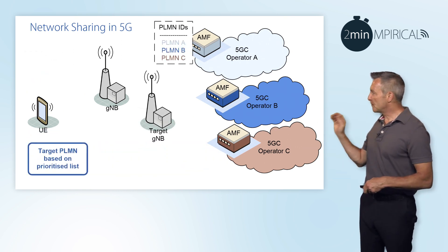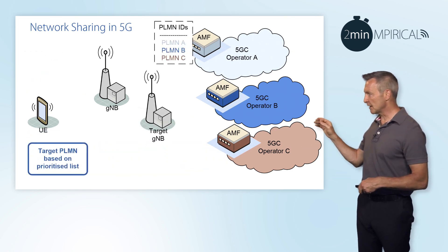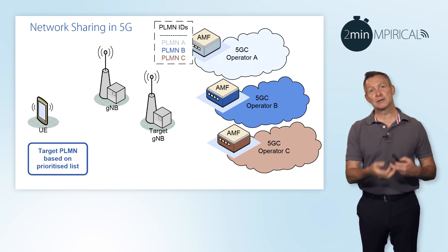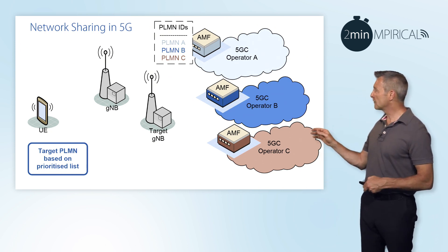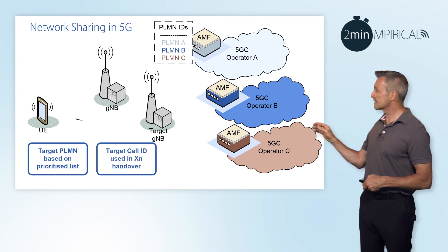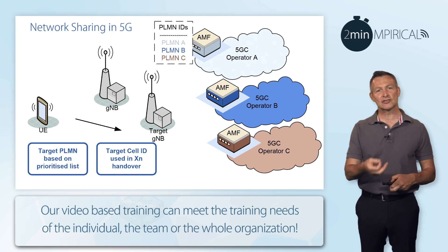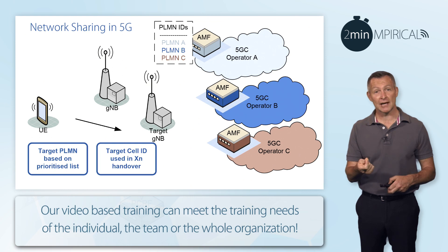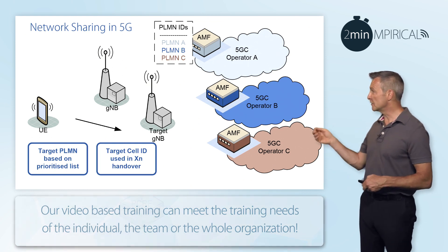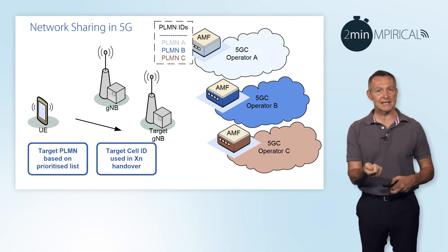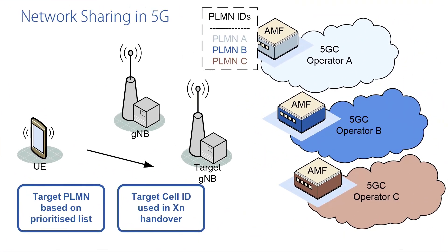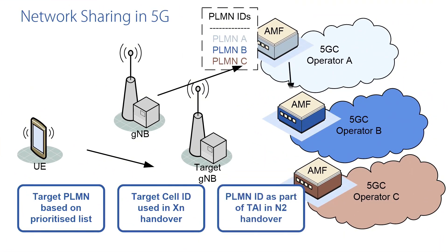In relation to mobility, we'll see the target PLMN being based on a prioritised list. We'll have the XN handovers utilising the target cell identity, so the source gNB will communicate with the target gNB across that interface and utilise the appropriate cell ID in order to do that. In relation to N2 handovers, it's the PLMN identity that's used, which is part of the tracking area identity.